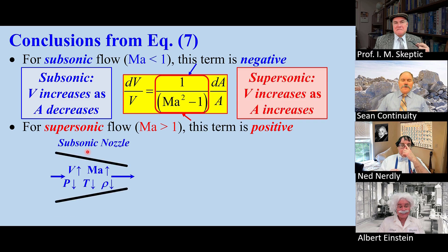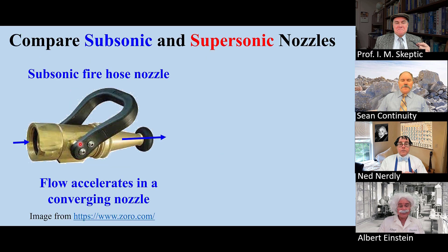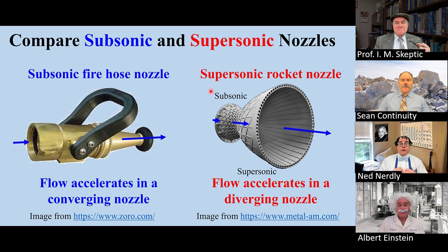Thus, a subsonic nozzle is a converging duct, and a supersonic nozzle is a diverging duct. In both cases, speed and Mach number increase. That is why a subsonic firehose nozzle is converging, but a supersonic rocket nozzle is diverging. In both cases, the flow is accelerated.